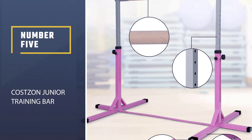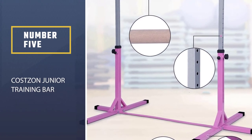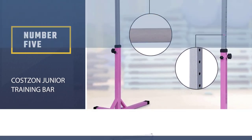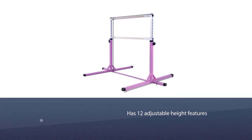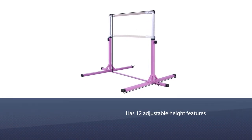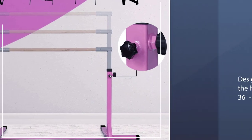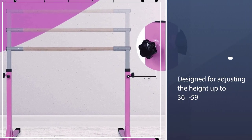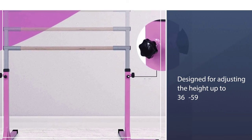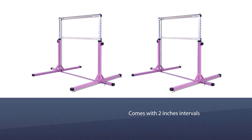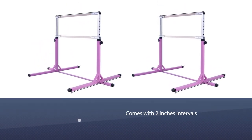Number five: Costzon Junior Training Bar for kids. Costzon Junior Training Bar for kids has 12 adjustable height features. The screw is specially designed for adjusting the height up to 36 to 59 inches with two inch intervals. The knobs are for locking up for your security. This gymnastic bar has a 4 feet width system.